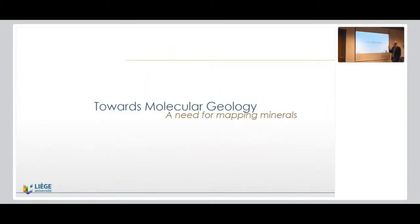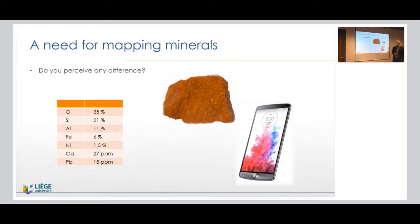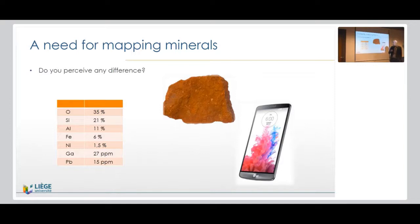Let's see what techniques we have and stress the need for mapping minerals. I'll start with a simple case. Do you see any difference between these two objects? This is a piece of laterite — average laterite from Australia — and this is a smartphone. The difference is so striking, you probably wonder why I'm asking. Again, because there is no major difference in terms of chemistry, at least for most elements. If you go for copper, you'll find a hundred times more in the smartphone; you'll also find more silver and gold. But for most elements, they are essentially the same.